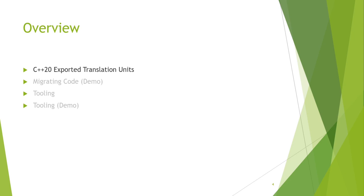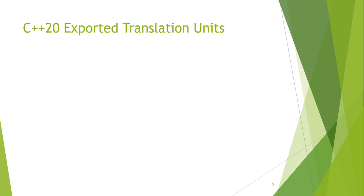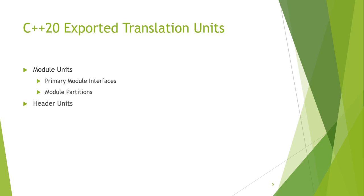Let's talk about C++20 exported translation units. I chose that wording very carefully. C++20 brings named module units, but it also affords C++ a more generalized notion of exported translation units. We have module units with two common portions: primary module interfaces and module partitions. Finally, we have header units, which is the last form of exported translation unit that C++20 gives us.